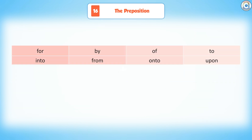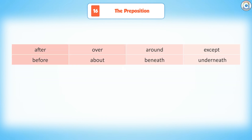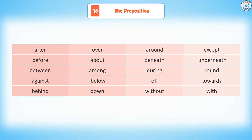Common prepositions used in English include: for, by, of, to, into, from, on, upon, since, till, across, under, through, up, at, within, in, above, beside, after, around, except, before, about, beneath, underneath, between, among, during, round, against, below, off, towards, behind, down, without, with.